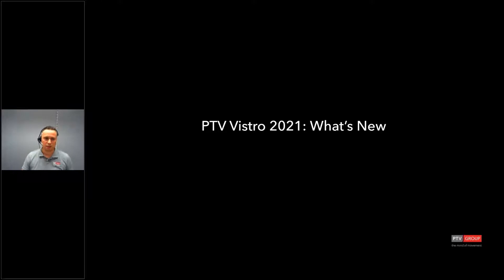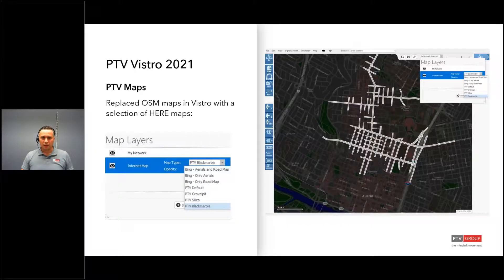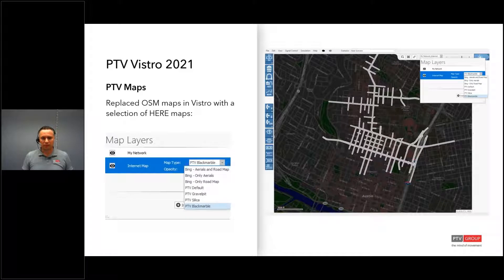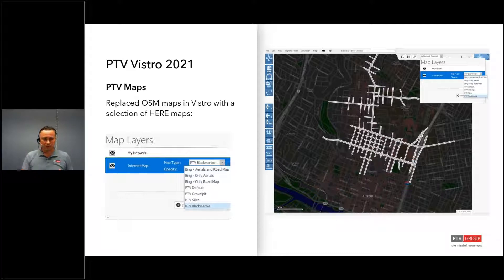Let's jump in with the new features and what's new with PTV Vistro 2021. Our first feature is a new map layer within Vistro, as well as the other products in our Vision Suite. This new map layer replaces the OSM layer and is based on HERE Maps. It gives you the ability to have different visuals within the map card — different colors and different styles.